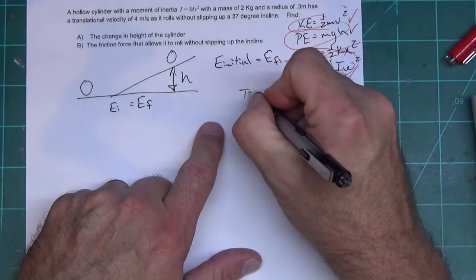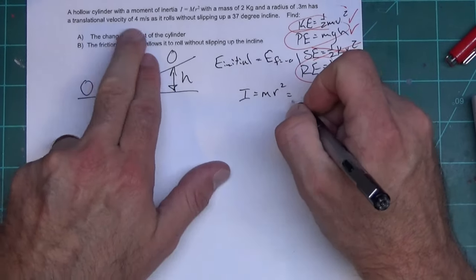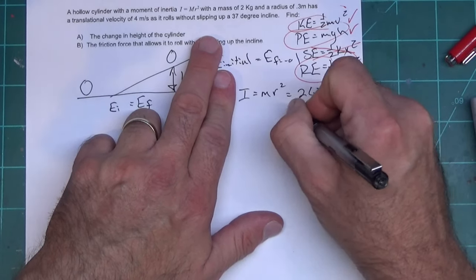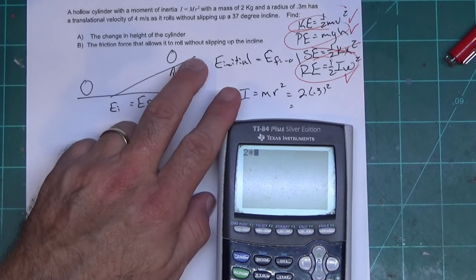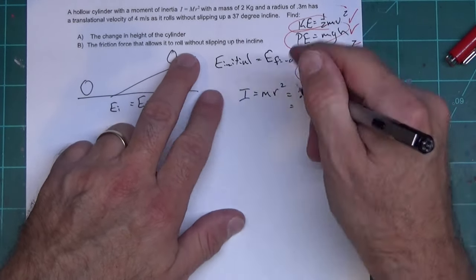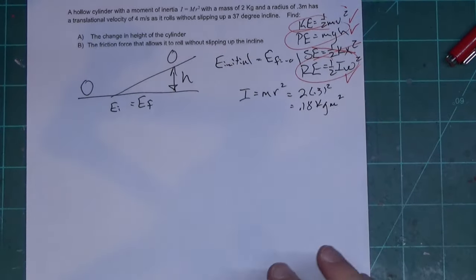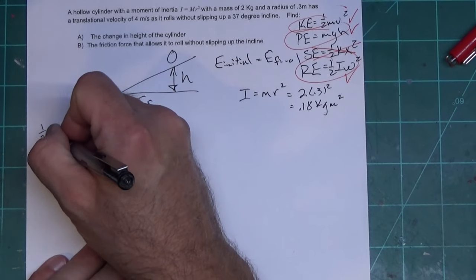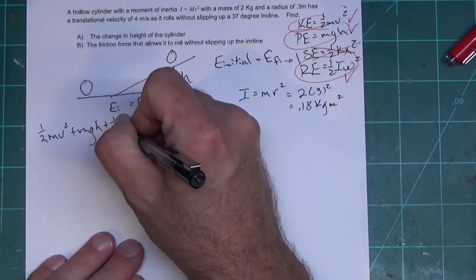Since it's rolling, we need the moment of inertia. For a hollow cylinder, I = mr². The mass is 2 kg and the radius is 0.3 m, so I = 2 × (0.3)² = 0.18 kg·m².